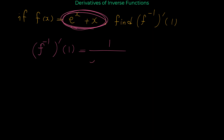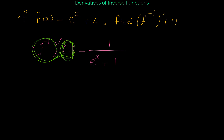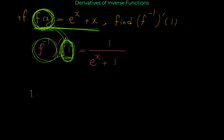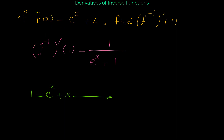The derivative of e to the x plus x is e to the x plus 1. Again, don't make the mistake of plugging 1 in for x here — this 1 is the x value for f inverse, so it's actually the y value for this function. We have to substitute 1 for f of x: 1 equals e to the x plus x, and from this we can find the x value we need.